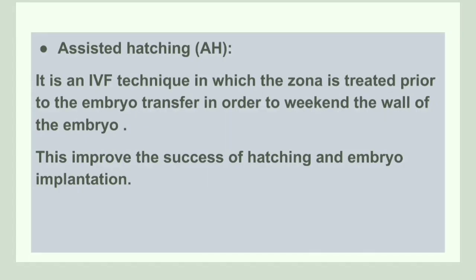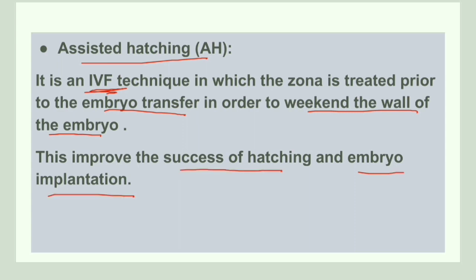Next, we will discuss assisted hatching. Assisted hatching is a technique in IVF in which the zona pellucida — the layer outside the blastocyst — is treated prior to the embryo transfer. This weakens the wall of the embryo, which leads to the success of hatching as well as embryo implantation.